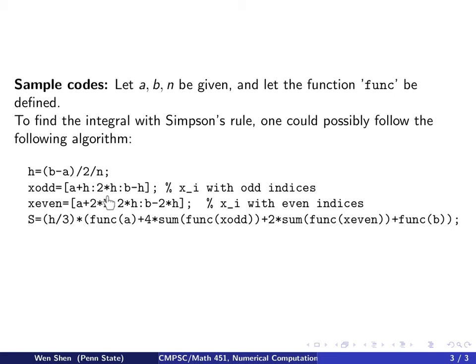And then since the even indices and the odd indices are treated differently, I choose to generate a vector x-odd that contains all the odd points. So that will be a plus h would be your first point, that's x1. And then you jump over 2 times h. So you jump over 2 indexes and you end at b minus h. That's x of 2n minus 1. That's the second last one. So you see this will go through all the odd ones.